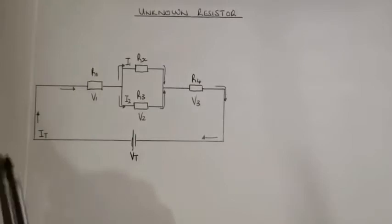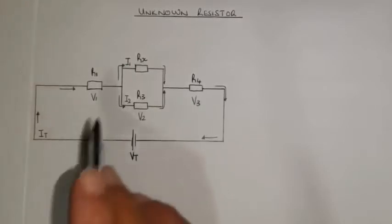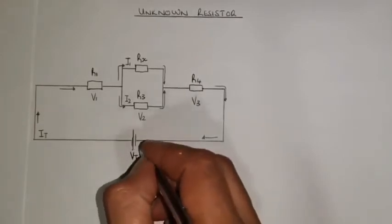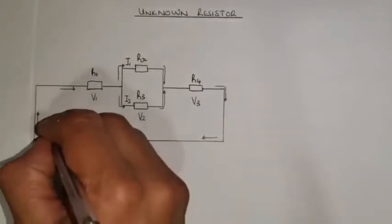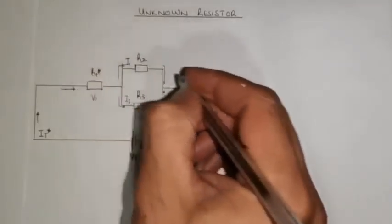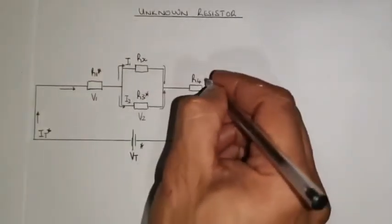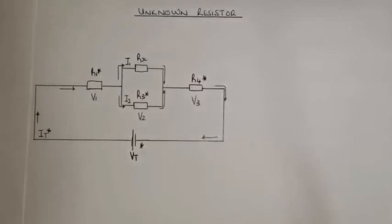First and foremost, I'm just going to make marks where we have known values, so that you can see what we actually have in the circuit. My total voltage is a known value, my I_total is a known value, R1 and R3 are known values, and R4 is a known value. So everywhere we have made a mark is a known value — just keep that in mind when I do the calculations or tell you what formulas to use.